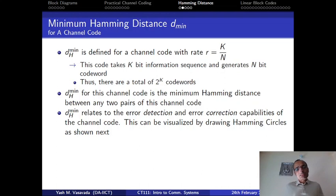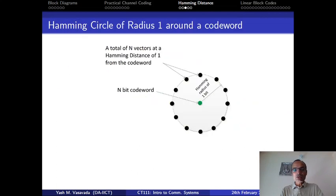In fact, specifically, if you recall, td is dhmin minus 1, it is simply 1 less than dhmin, whereas tc is given as the floor function of dhmin minus 1 divided by 2. And the way to see that is to start drawing Hamming circles or what are known as Hamming spheres.